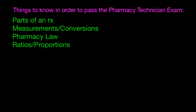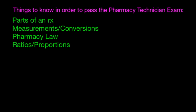The first set of things is you need to know the parts of a prescription, the different parts. You need to know the measurements and the conversions — how to convert between grams, milligrams, those kind of things. And there's some pharmacy law that's important to know. And then there's going to be the ratios and proportions and how to convert and figure those out.